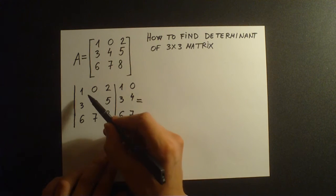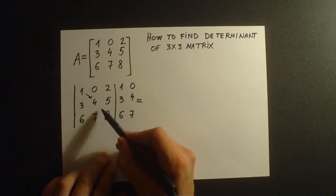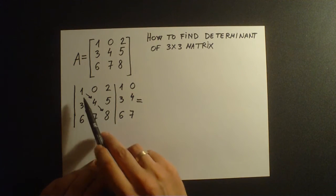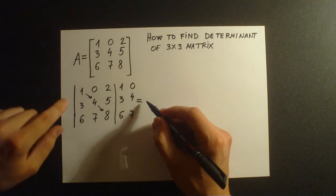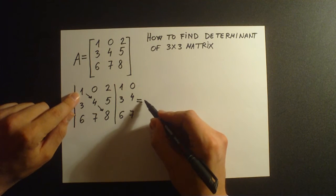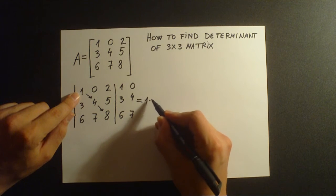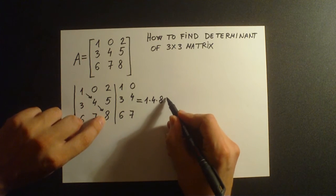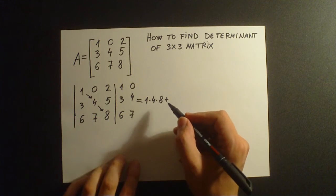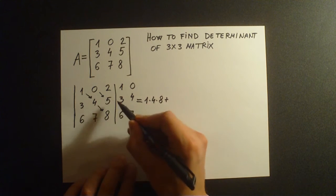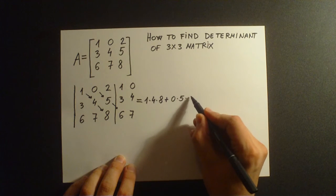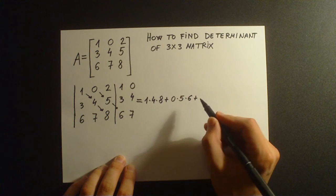First we're going to start multiplying diagonal elements of the first diagonal. The first elements of this diagonal are 1, 4, 8, so we're going to multiply them. Then we'll add the multiplied elements of the second column, that is 0 times 5 times 6.